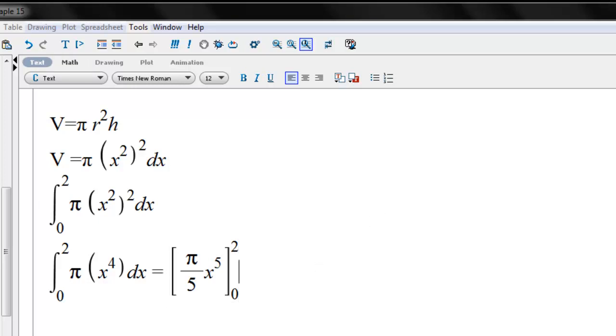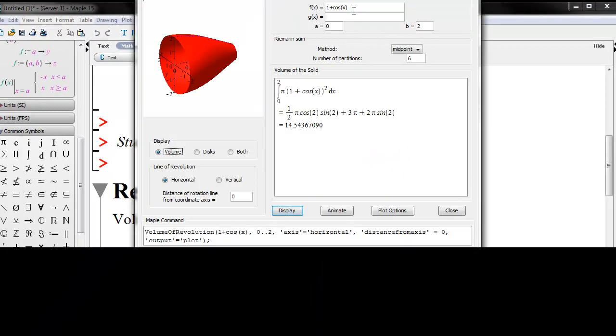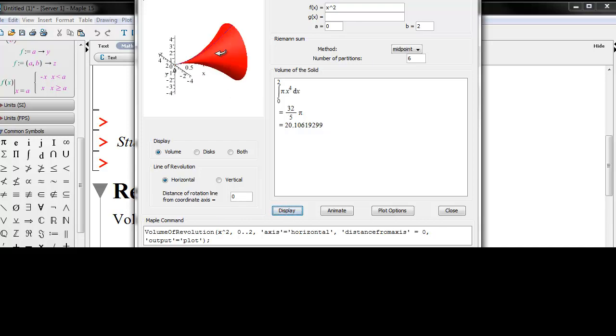If we go back to our volume tutor, I'm going to hit enter at the end of that line there. And recall we had x squared, 0 to 2, volume, horizontal and 0 set. And we display that. That is the correct picture there. So that is what we wanted.